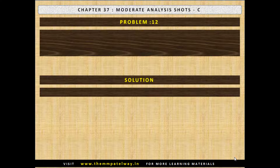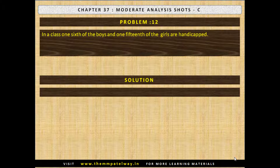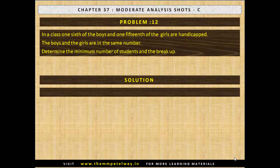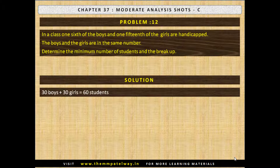Problem No. 12. In a class, one sixth of the boys and one fifteenth of the girls are handicapped. The boys and girls are in the same number. Determine the minimum number of students and the breakdown. The solution is there are 30 boys and 30 girls.